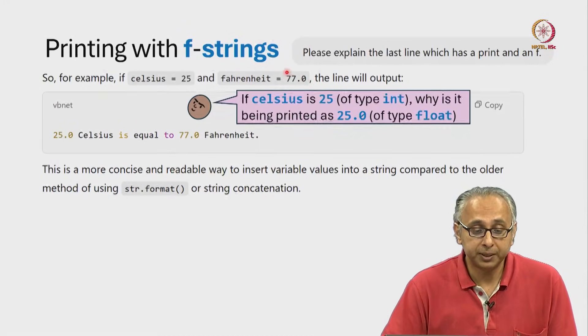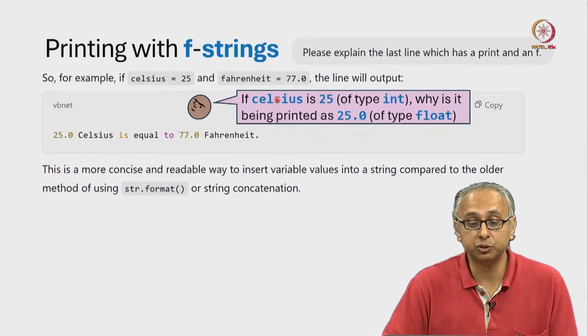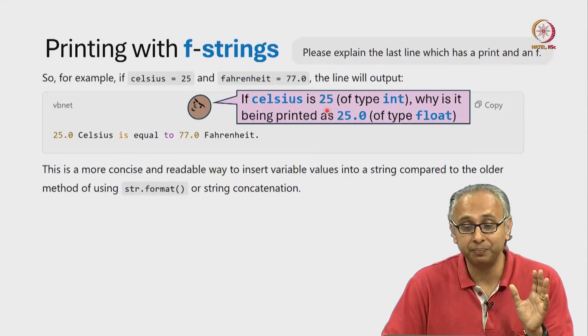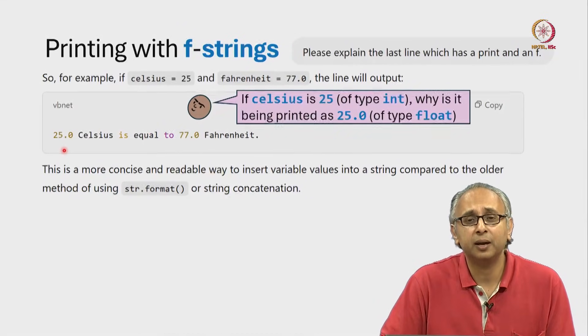But this explanation uses Celsius as an integer, right? So, 25 without the dot zero is an int. And if it's an int, how come it's being printed as a float?